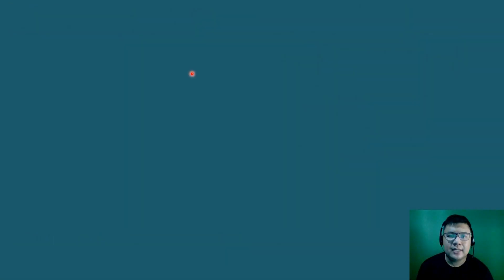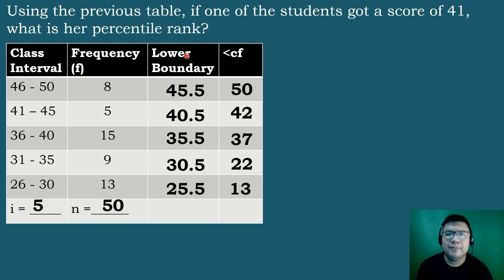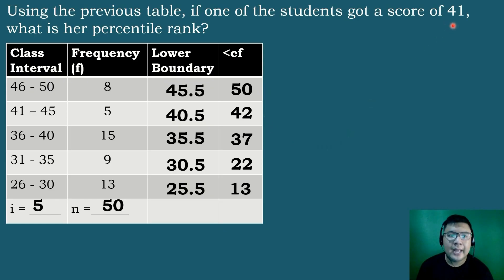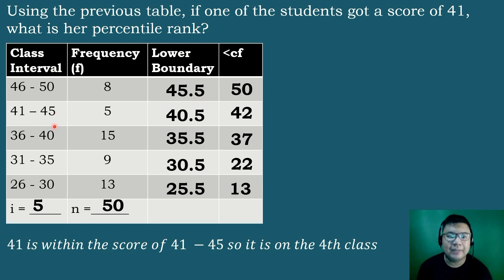Let's solve our last example. Using the previous table, if one of the students gets a score of 41, what is her percentile rank? The first thing we need to do is identify the percentile rank class. Looking at the class intervals, 41 falls within the class 41 to 45, so the percentile rank class is located on the fourth class.